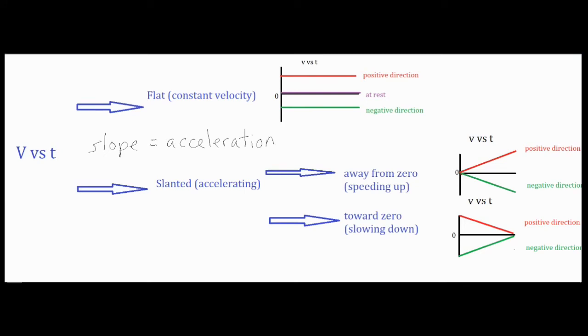So the quick and easy way to identify if it's speeding up is to see if the line is moving away from zero. If the line is slanting away from zero, that means it is going away from zero, therefore getting a greater and greater positive velocity or a greater and greater negative velocity.